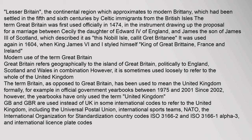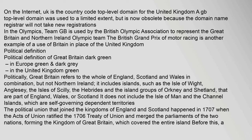GB and GBR are used instead of UK in some international codes to refer to the United Kingdom, including the Universal Postal Union, International Sports Teams, NATO, the International Organization for Standardization country codes ISO 3166-2 and ISO 3166-1-3, and international licence plate codes. On the internet, the .gb top-level domain was used to a limited extent but is now obsolete. In the Olympics, Team GB is used by the British Olympic Association to represent the Great Britain and Northern Ireland Olympic Team.